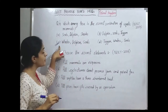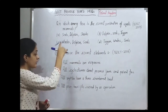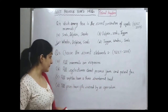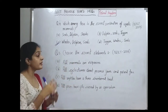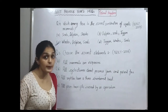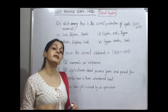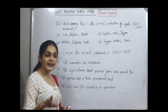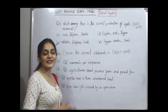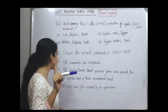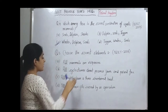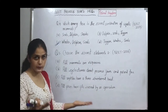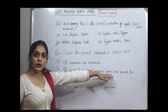Question five from 2016: choose the correct statement. The first statement says all mammals are viviparous — this is incorrect because some mammals are oviparous. If you know which mammal is oviparous, please write it in the comment section. The next statement says all cyclostomes do not possess jaws and paired fins. We know cyclostomes are jawless and they also lack paired fins and scales on their body — this appears correct.